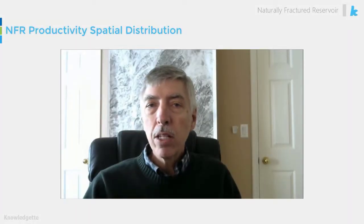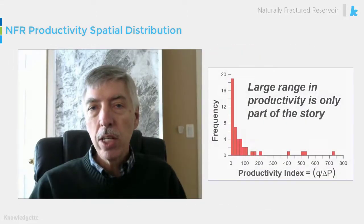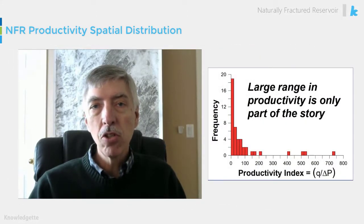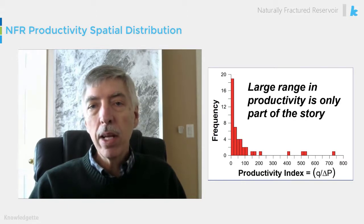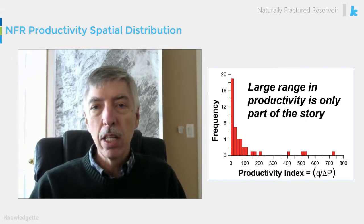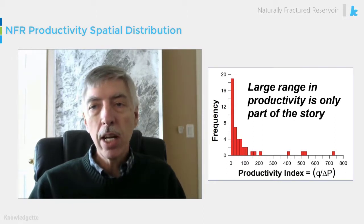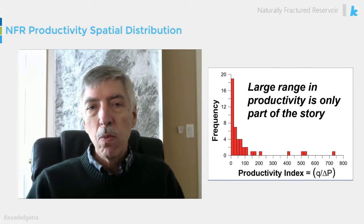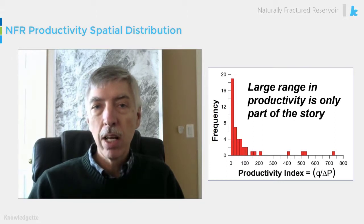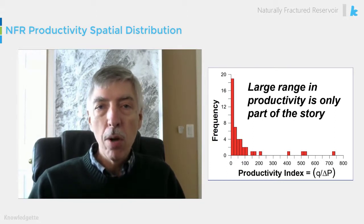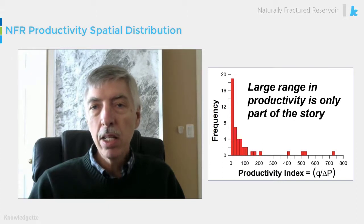So far, we've looked at plots like the one shown here as an indication of heterogeneity — the strong asymmetry and wide range of values in the productivity index in this particular reservoir. This is yet another naturally fractured reservoir. What I'd like to consider here, that we haven't talked about yet, is the fact that there's a spatial component to the heterogeneity. And this is a very critical aspect of the story of heterogeneity and naturally fractured reservoirs.